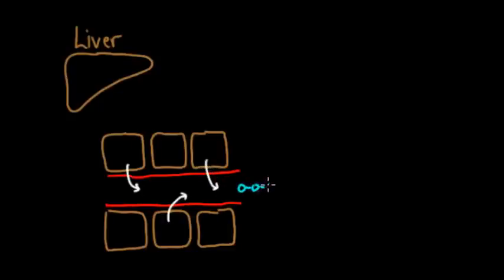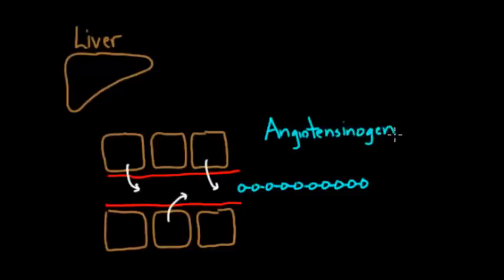And if you were to draw angiotensinogen, it's actually a pretty large molecule. And it has lots and lots of amino acids. And amino acids are these tiny little circles that I'm drawing. And I'm connecting them with little bonds. So you can imagine amino acids being like pearls on a necklace. And in total, angiotensinogen has about 450 plus amino acids.